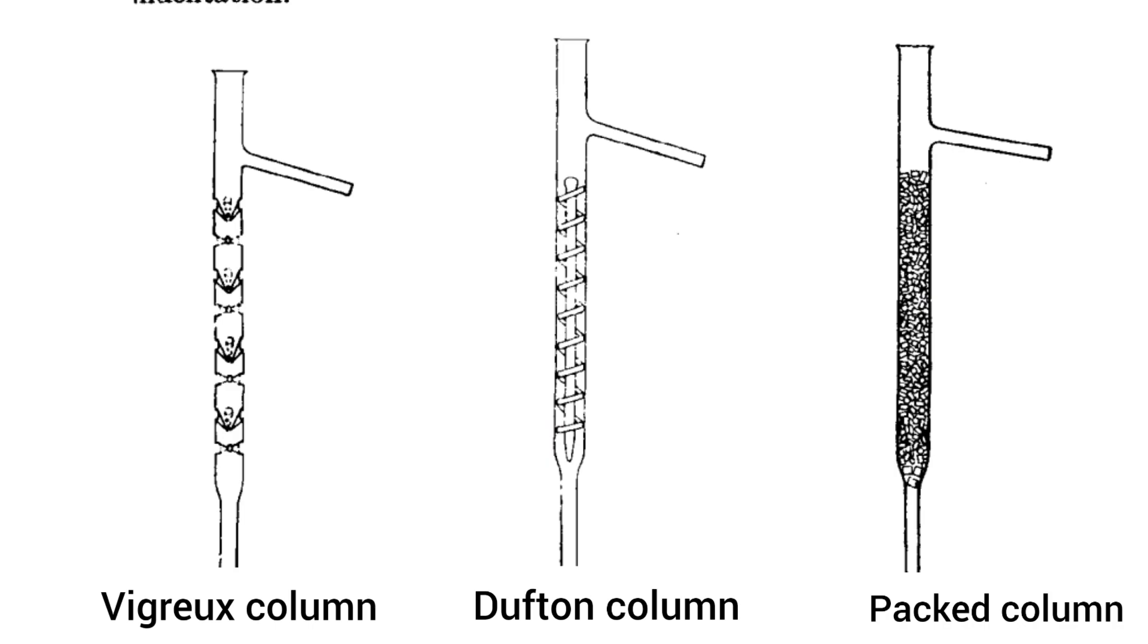It has very good efficiency. Now the third type is the packed columns which consist of a hollow glass tube which can be packed either with steel wool or glass beads. These columns have maximum efficiency and give best separation.